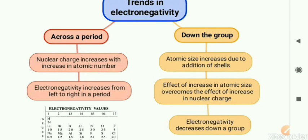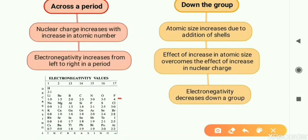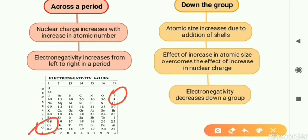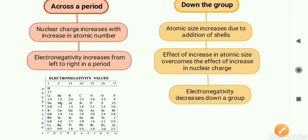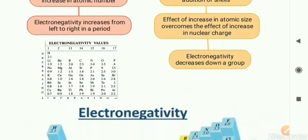Electronegativity increases left to right in a period and decreases down the group. This table from your book shows the Pauling scale values for reference — no need to learn it. You can see the most electronegative element fluorine has a value of 4 — no unit is given, just the number. The least electronegative is cesium with 0.7. The scale generally runs from 0 to 4; the value 0 is generally not observed.